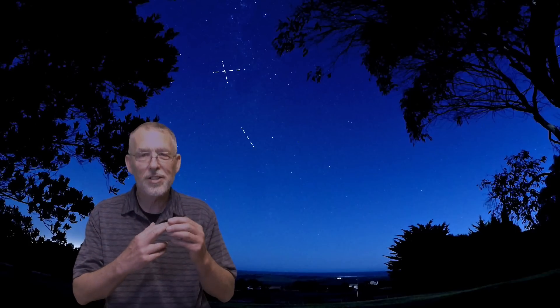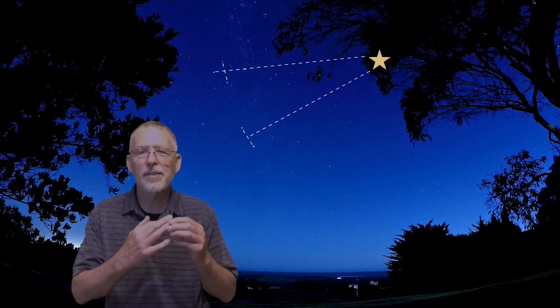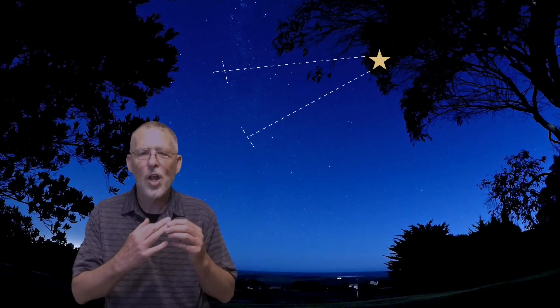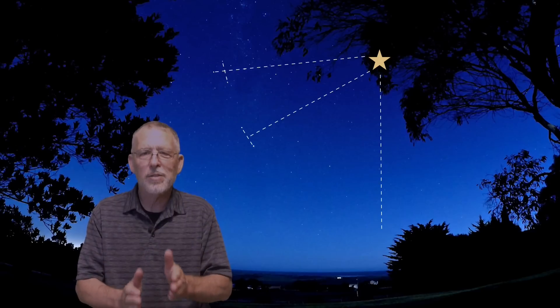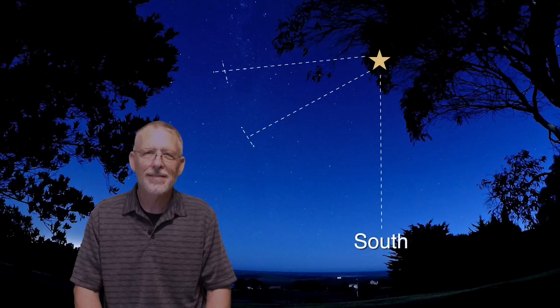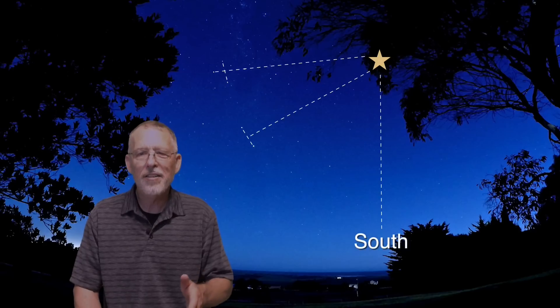For each picture, identify the location of the Southern Cross, the pointer stars, and the South Celestial Pole. Look straight down to the horizon from the South Pole and you will see the direction of South. Turn 180 degrees and you will be facing North.